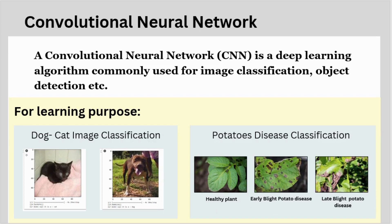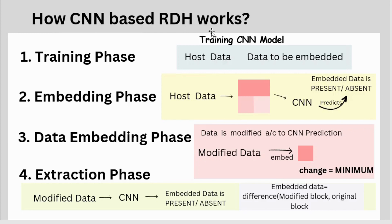How does CNN-based reversible data hiding work? It contains four phases: training phase, embedding phase, data embedding phase, and extraction phase. In the training phase, a pair of host data and corresponding data is trained using the CNN model. In the embedding phase, the host data is divided into blocks and CNN predicts if embedded data is present in each block. In the third phase, data is modified according to CNN prediction, then embedded into blocks with minimum change. In the extraction phase, modified data is processed by the trained CNN model again — CNN predicts presence or absence of embedded data in each block, and the embedded data is retrieved based on predictions and the difference between original and modified blocks.